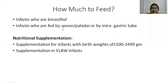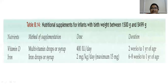Regarding nutritional supplementation: for birth weight 1500 to 2499 grams, only vitamin D and iron are needed — other than that, breast milk is sufficient for optimal growth and development.